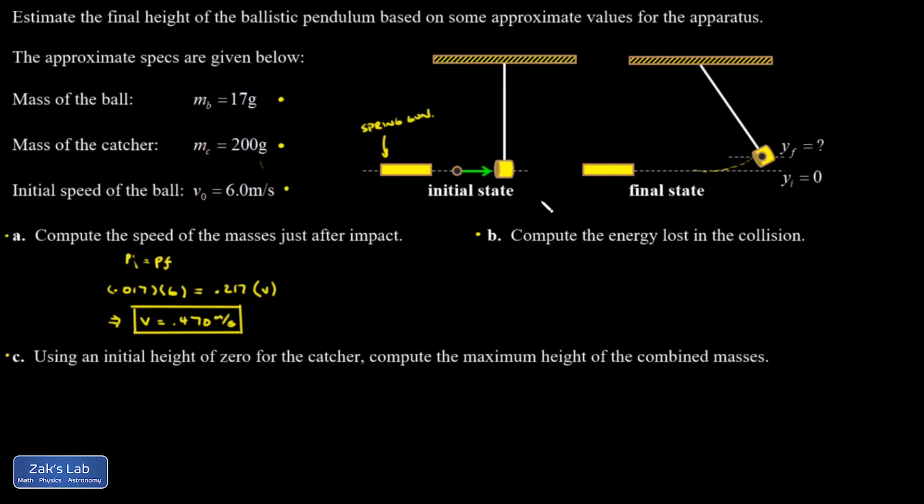Part B: Compute the energy lost in the collision. The initial kinetic energy was one-half mv squared for the ball bearing, which was the only thing moving. That's one-half times 0.017 kilograms times 6 meters per second squared, which gives 0.306 joules.